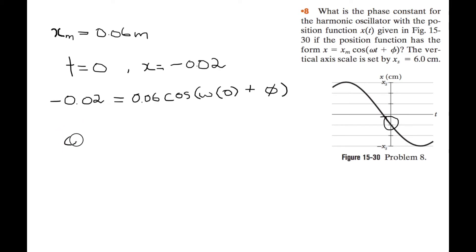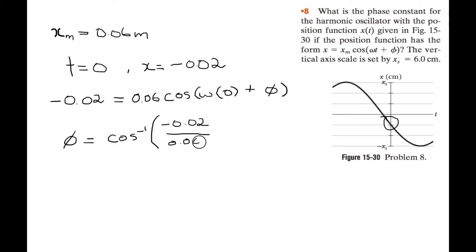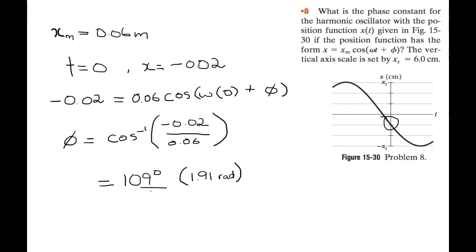So we can solve for phi: phi is equal to cosine inverse of negative 0.02 over 0.06, and this is equal to 109 degrees, or 1.91 radians, or 2.59 radians.